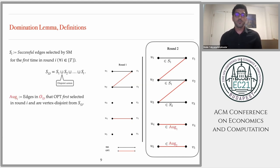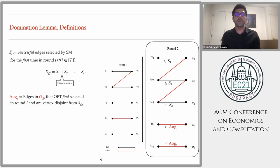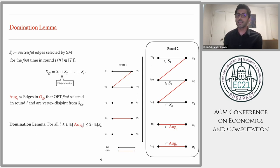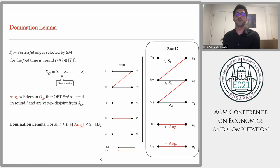We also define aug_i to be the subset of edges selected by optimum in round i that were discovered for the first time in round i. In addition, we assume these edges are vertex disjoint from what stable matching selected — in other words, these edges can augment what stable matching has selected and still form a valid matching. As you can see in the figure, U4V4 is an edge selected by optimum in round two that can augment the black edges that stable matching has selected — we call it aug_1 since it was first found in round one. Given all these definitions, we can now state our main technical lemma, the domination lemma, which states that the set S_i of successful edges first selected by stable matching in round i is at least half the size of the set aug_i of edges first selected by optimum in round i that are vertex disjoint from S_{≤t}.